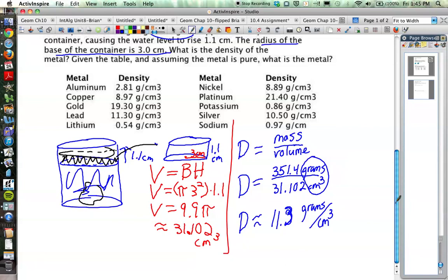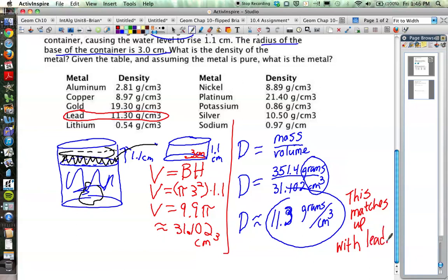Let's look back at our chart and see which of these metals have a density of 11.3. Maybe you already noticed it, but over here on the left side, we have lead. Lead has a density of 11.3 grams per cubic centimeter. So this density matches up with lead. Lead must have been the clump of metal that we dropped into the container with the density of 11.3 grams per cubic centimeter.